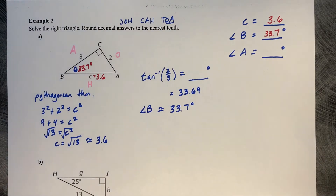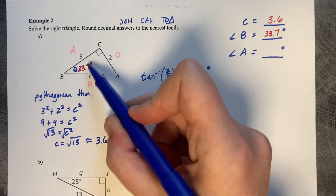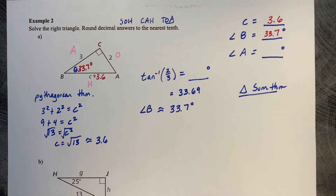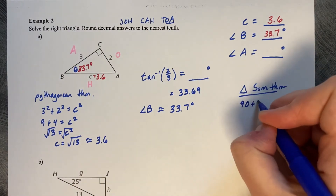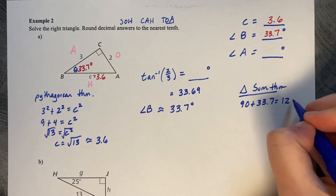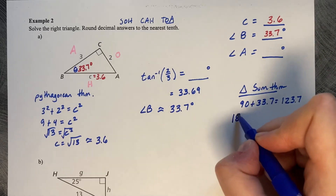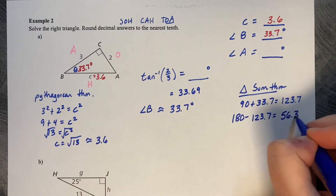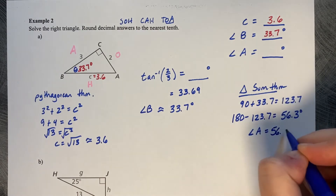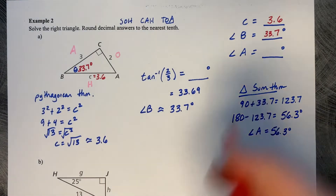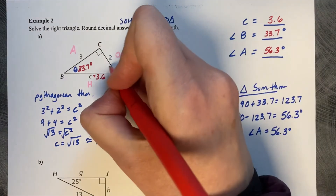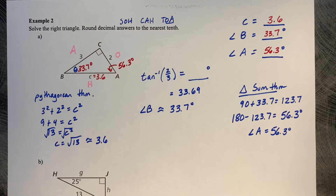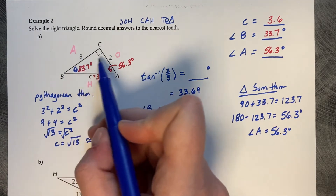The last angle measure, angle A, is easy to find using triangle sum theorem — all triangles sum to 180 degrees. 90 plus 33.7 is 123.7, and 180 minus 123.7 leaves us with angle A equal to 56.3 degrees. That's solving a right triangle when we know two of the side lengths.